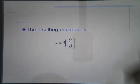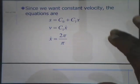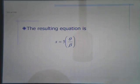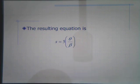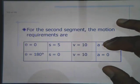Solving for constants c₀ and c₁, our resulting position equation is s = 5(θ/β). Notice when θ equals zero, s equals zero; and when θ equals β, s equals five inches — just as it should be for traveling at 10 inches per second for half a second.